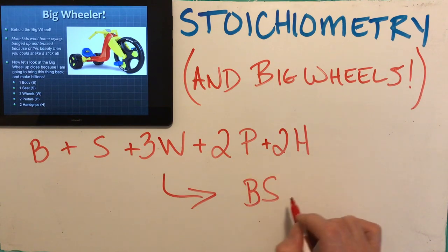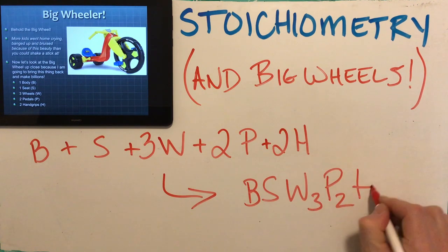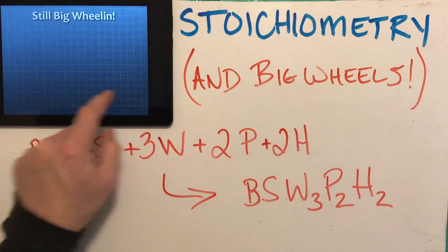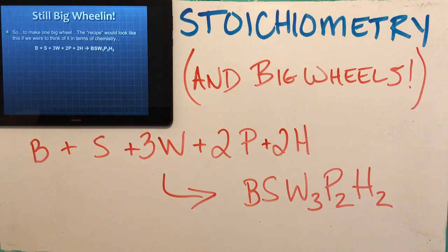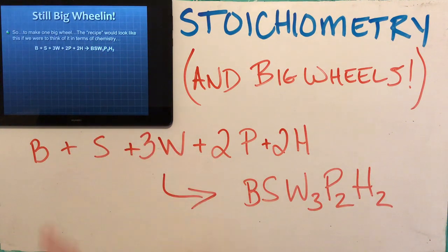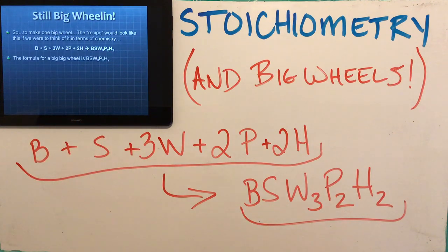If I put all these together I end up with the formula for a big wheel. So this is the formula: B + S + 3W + 2P + 2H → Big Wheel. What I've basically done is come up with a recipe. These are my reactants and this is my product. So the formula for a big wheel is right here — there's what a big wheel is.